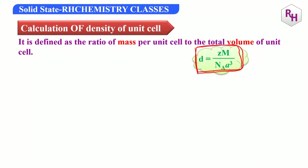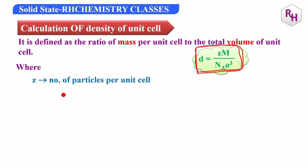So, what is Z, what is NA, what is A, what is M — these are all the variables in the formula. This formula is correct: ZM over A cube times NA. Z is nothing but the number of particles per unit cell.